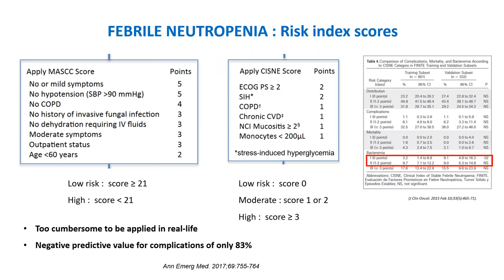Febrile neutropenia mortality ranges between 2.6% and 7% for patients with solid tumors. Risk factors for mortality include older age above 65 years, lung cancer versus other solid tumors, presence of comorbidities, sepsis, pneumonia, and admission to intensive care. Risk index scores such as the MASCC score have been described, but these scores are too cumbersome for real-life application and the negative predictive value for complications is only 83%, so they are not very useful in routine practice.